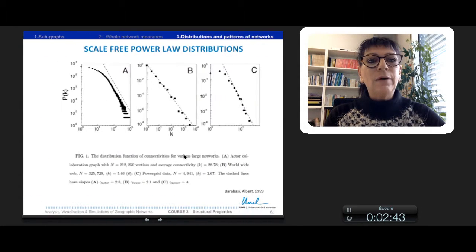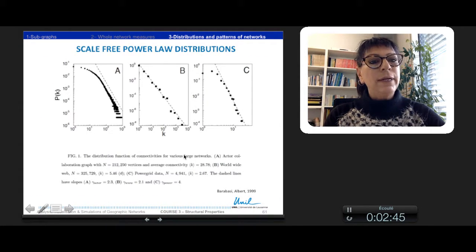We have the different vertices of this graph of connection. The second one is the World Wide Web, and the third one is the power grid data.